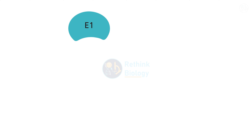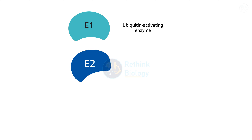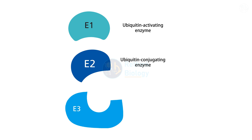Ubiquitylation requires three types of enzymes: E1 ubiquitin-activating enzyme, E2 ubiquitin-conjugating enzyme, and E3 ubiquitin ligase.